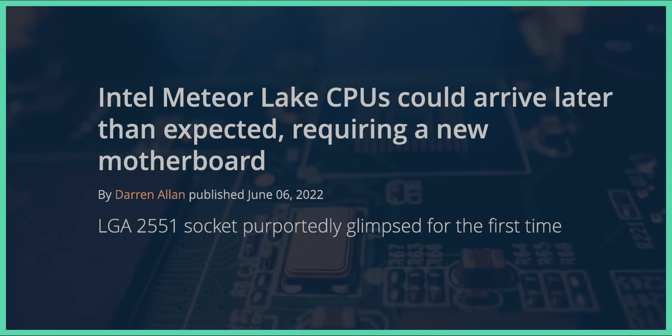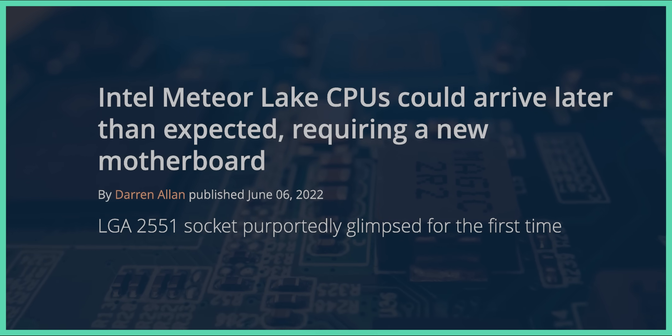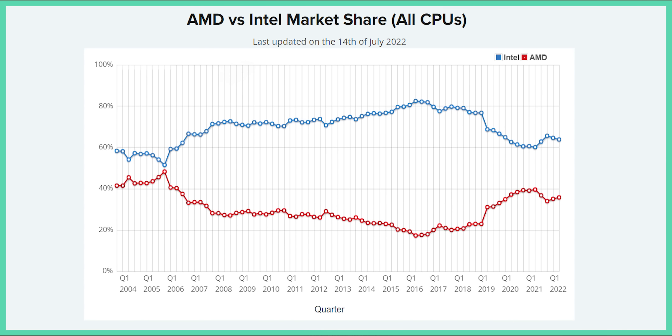In fact, Intel just delayed their 14th-generation Meteor Lake processors until the second half of 2023. These processors were supposed to be Intel's answer to AMD's Ryzen 7000s. As a result of these constant delays and setbacks, AMD has been eating into Intel's CPU market share for a while now.